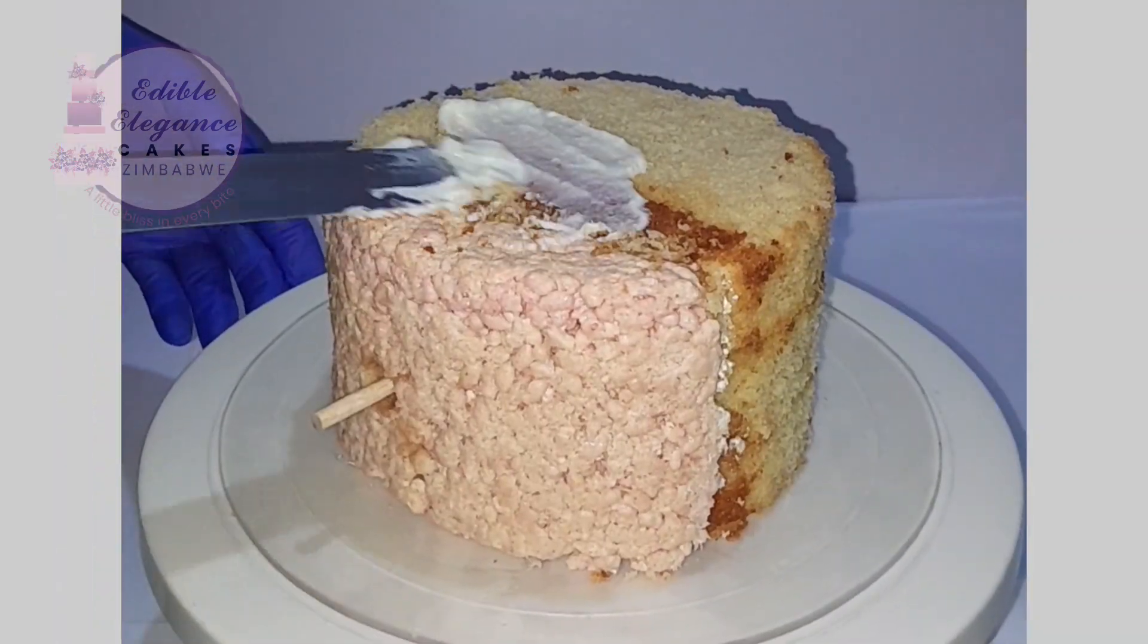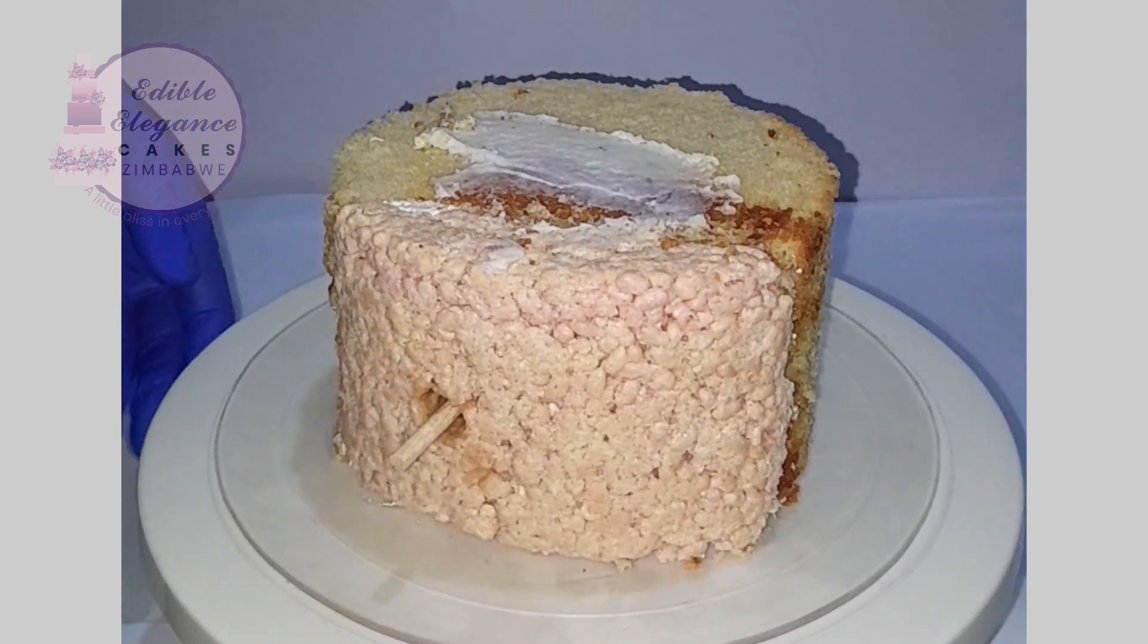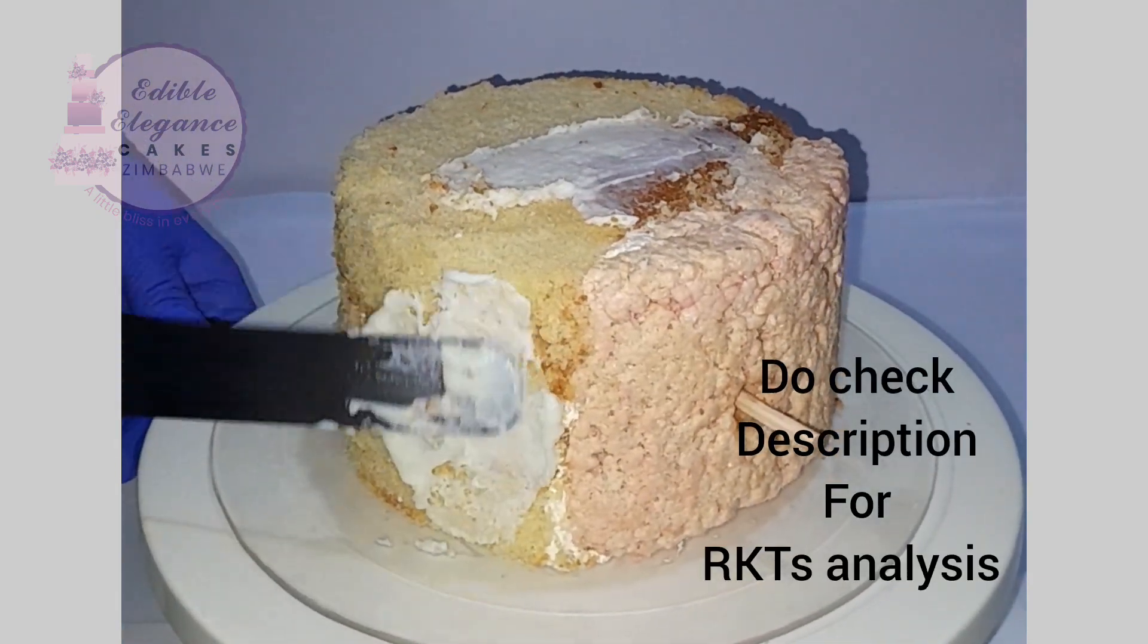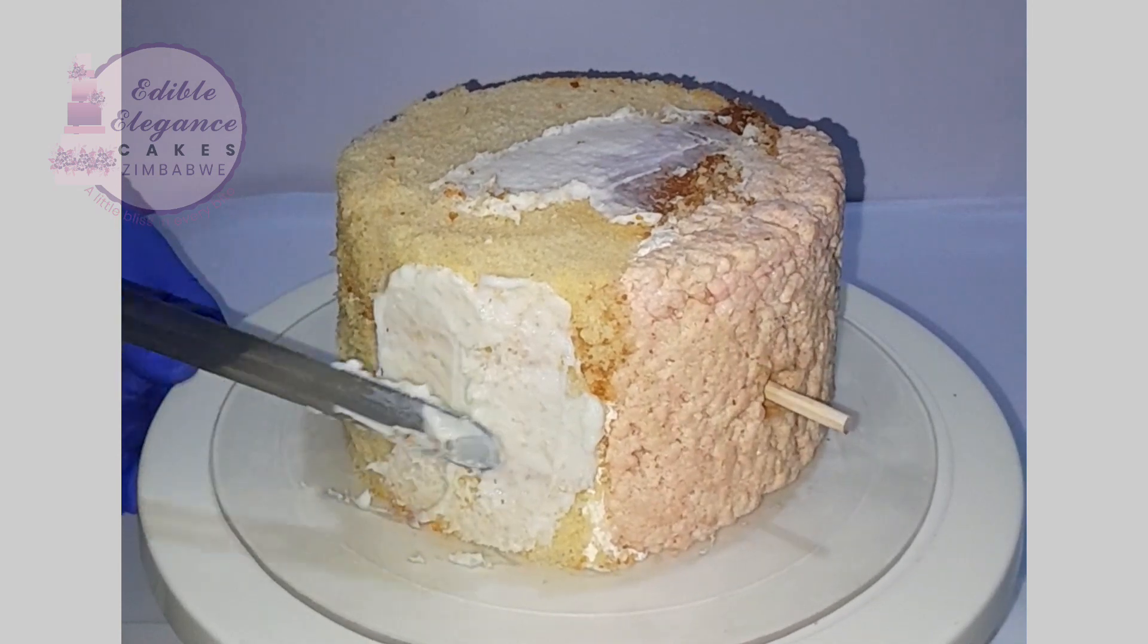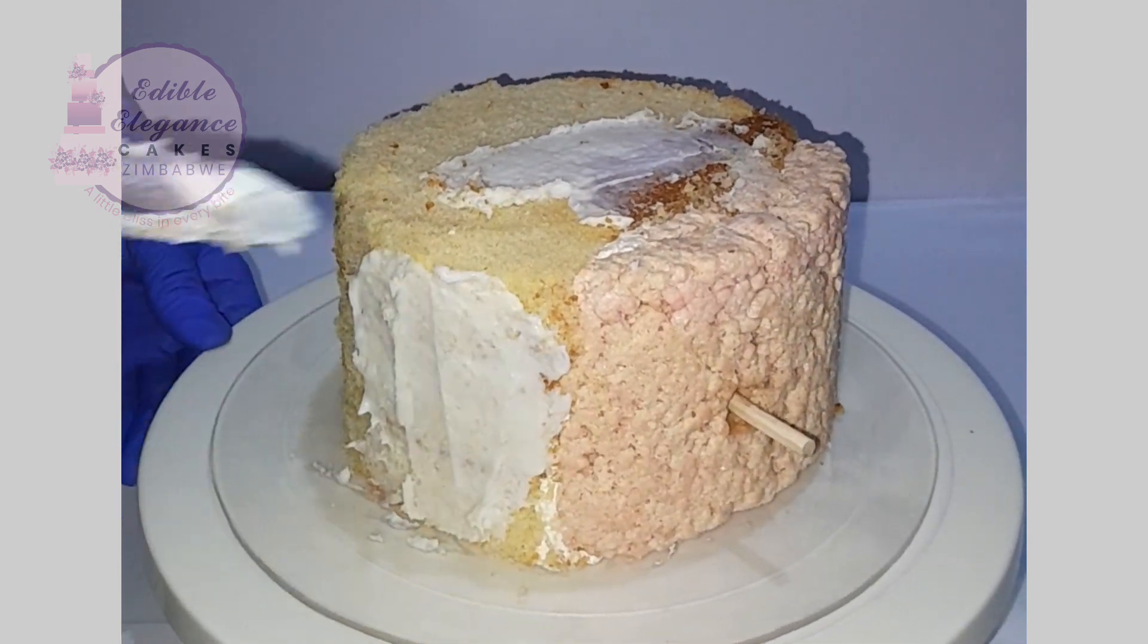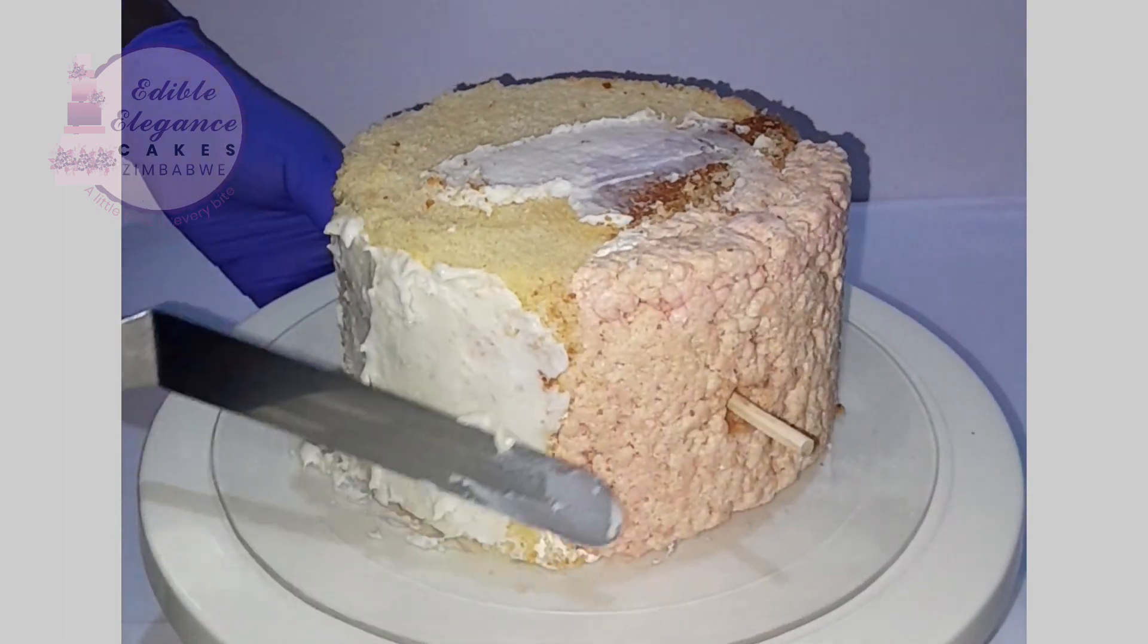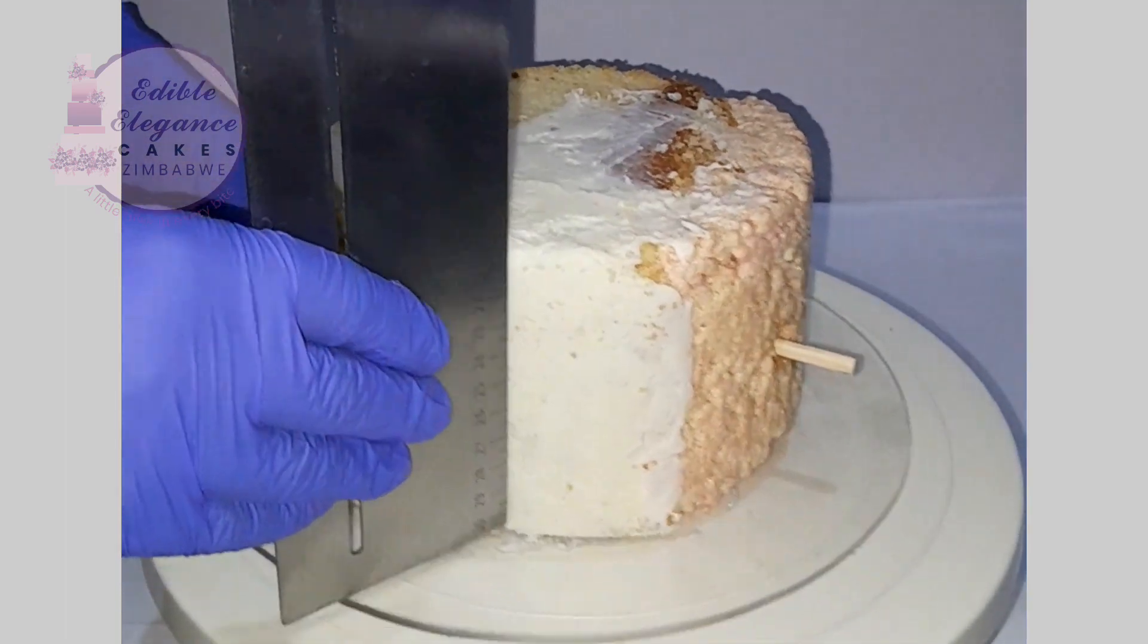So last time we used wheat puffs and they collapsed on us, so today we're gonna try and use rice crispy treats and see how it goes. Crumb coating is next and today we are crumb coating with white chocolate ganache.